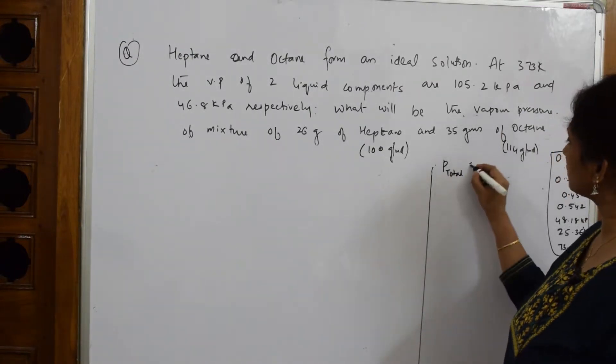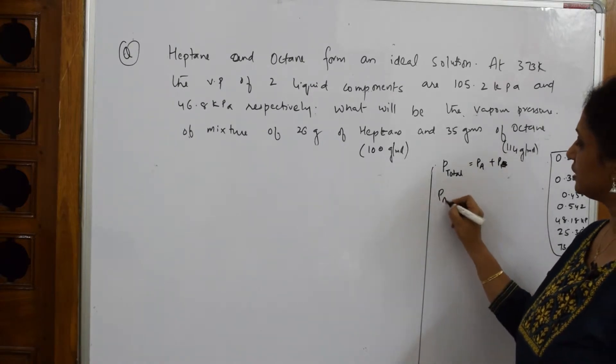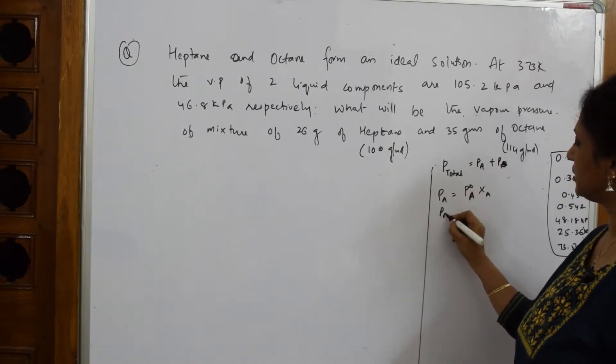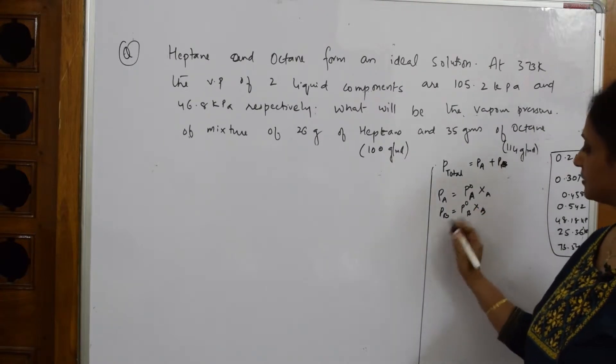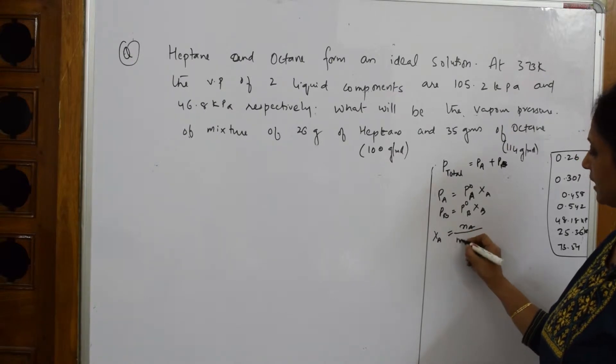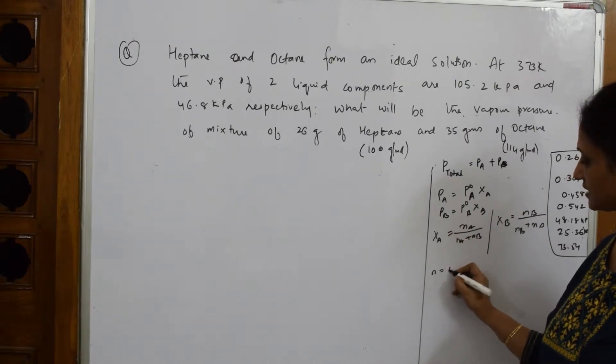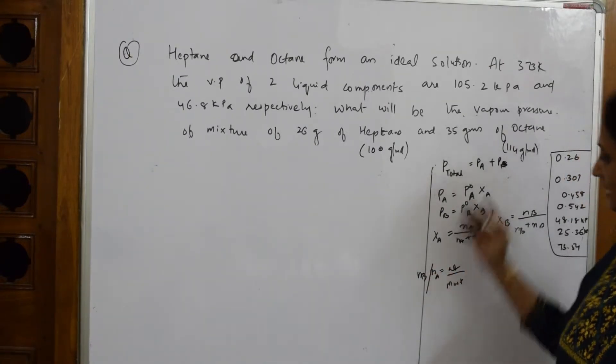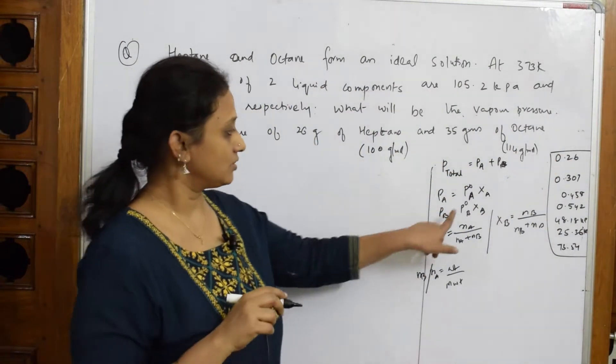What do we know? P total is already, we have derived, it is equal to PA plus PB. What is PA equal to? Your vapor pressure of the solution is equal to P naught A into XA. If I have to speak in terms of B, this is your formula. For finding out this particular X quantity, mole fraction of XA is equal to NA by NA plus NB. For B it is the same story but only thing is you write NB in the numerator. For finding out number of moles, I have to always take weight by molecular weight. Why did I write all this? Because they've asked me to find out this quantity but this quantity is again related to all these formulas.